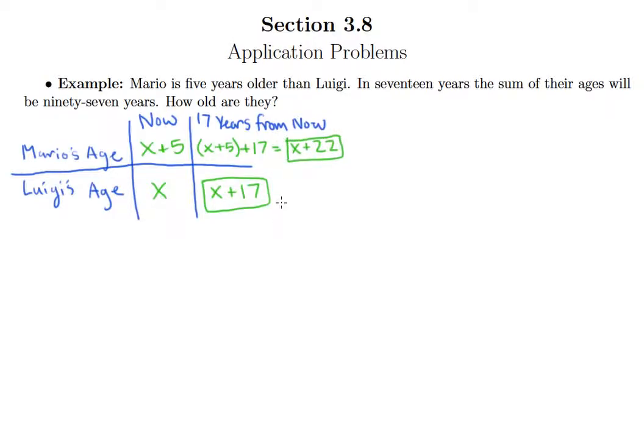So we know an expression for Luigi's age in 17 years and an expression for Mario's age in 17 years. Now what we can do is look at this sentence and figure out if that allows us to set up an equation. In 17 years, the sum of their ages will be 97. So sum means addition, and that sum will equal 97. So what plus what equals 97? Well, their ages in 17 years. So all I need to do is take Mario's age in 17 years and Luigi's age in 17 years.